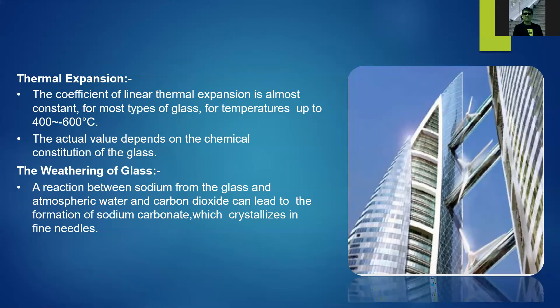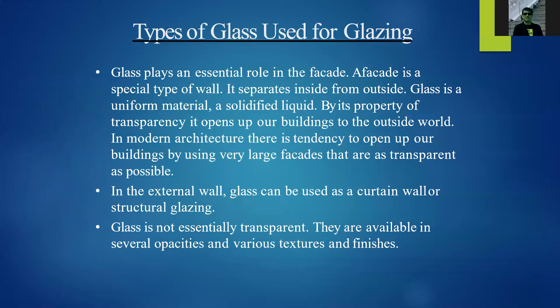Glass plays an essential role in the facade, which is a special type of wall that separates the inside from the outside. Glass is a uniform material — a solidified liquid — with the property of transparency. In modern architecture, there is a tendency to open up buildings using very large transparent facades. In external walls, glass can be used as a curtain wall or structural glazing and is available in several opacities, textures, and finishes.